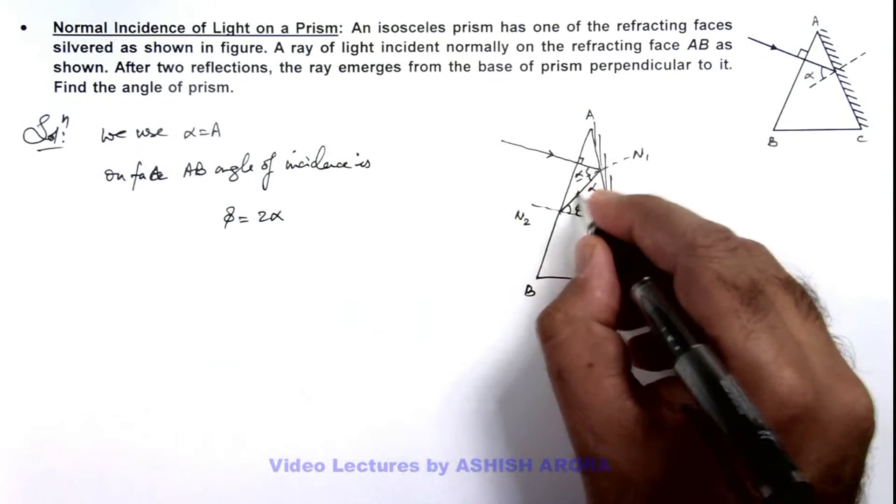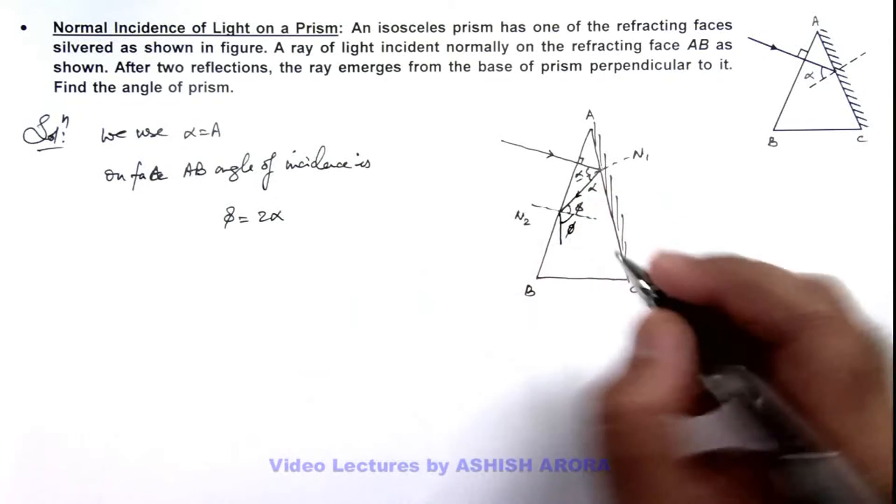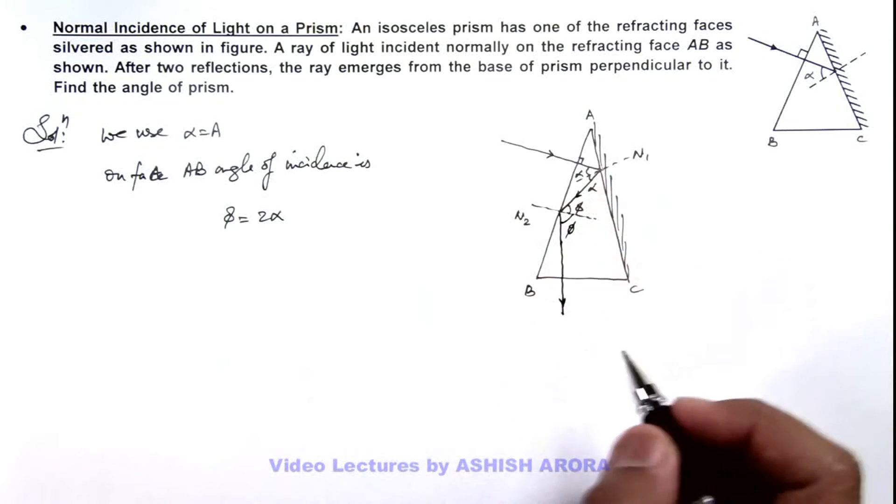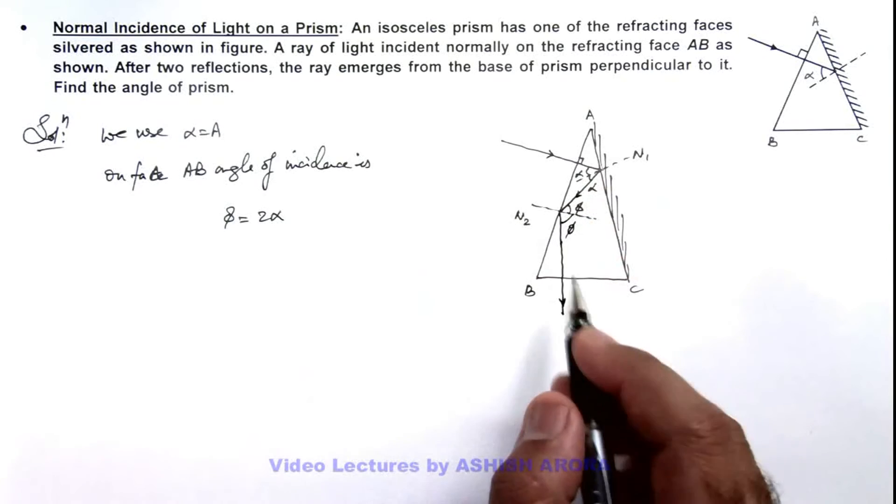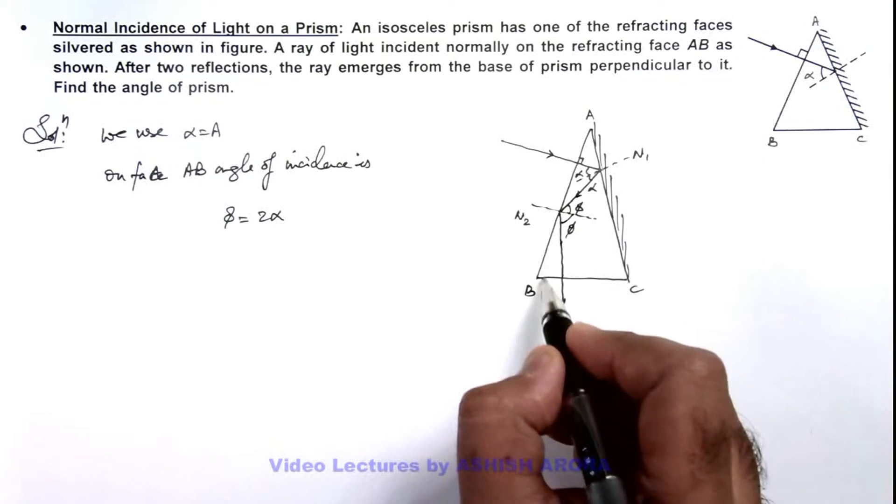So light after second reflection will be reflected at an angle, and finally it is given that it is coming out normal to the base of prism. That means in this situation, this value of phi should be equal to this base angle B.